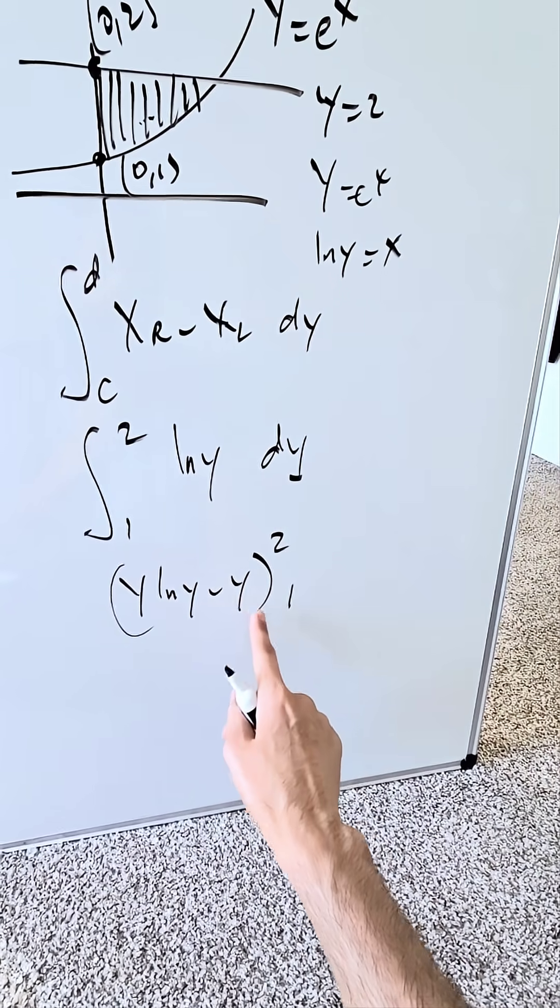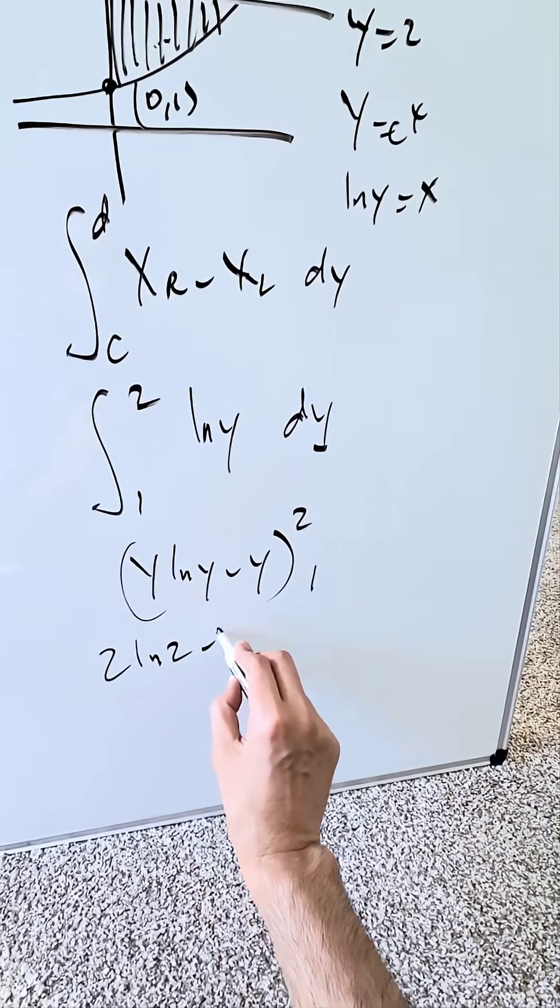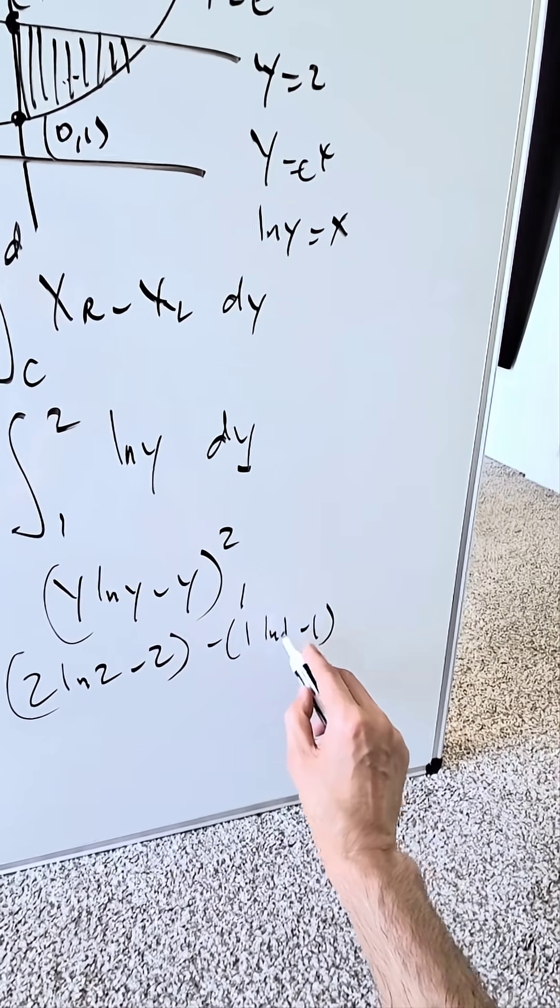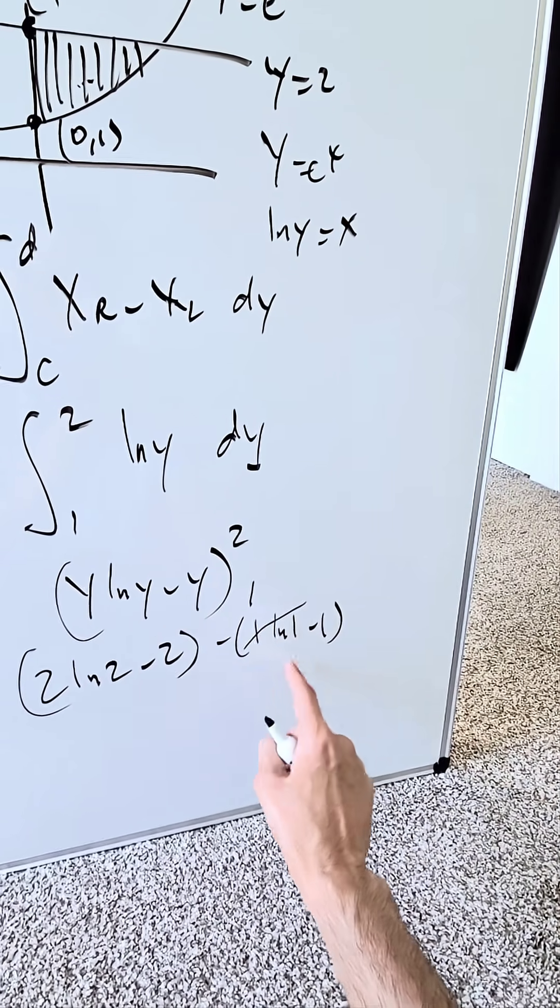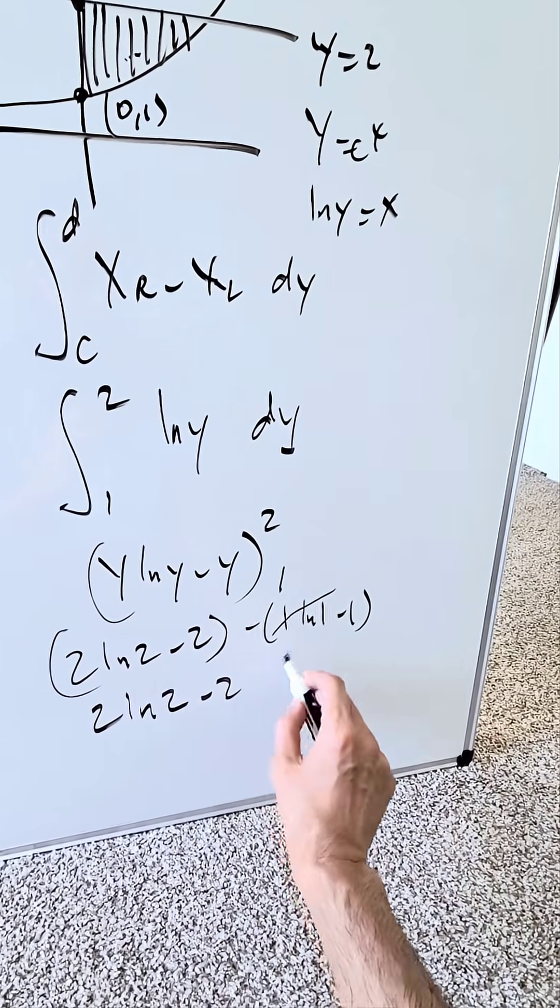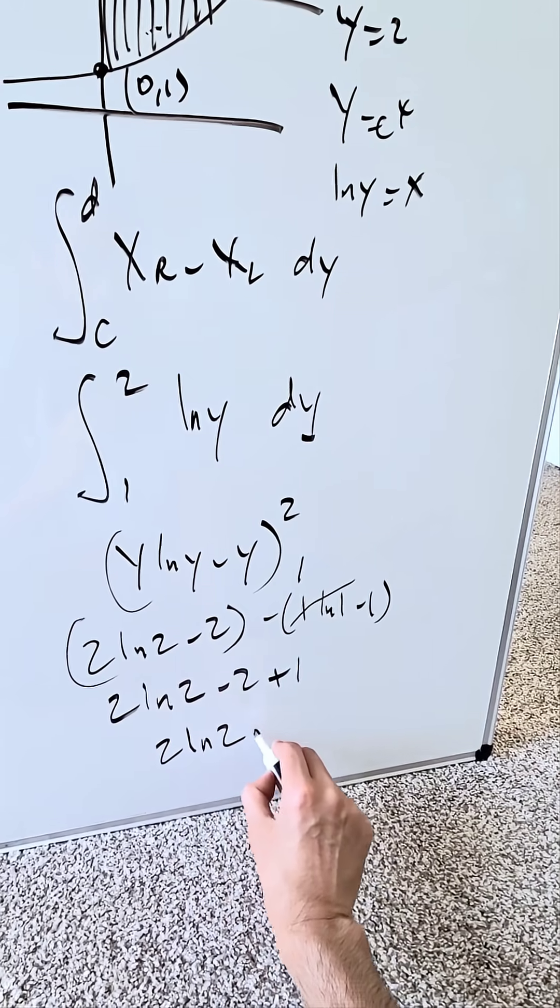I'm going to put 2, I'll put 1 in place of y and do the difference. I will have 2 natural log 2 minus 2 minus 1 natural log 1 minus 1. This right here is 0. Natural log 1 is 0, it goes away. What remains is 2 natural log 2 minus 2 plus 1. Your end result for that area is 2 natural log 2 minus 1.